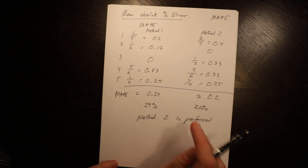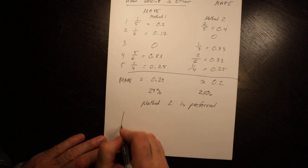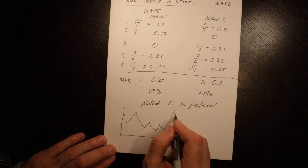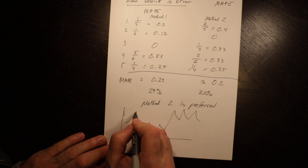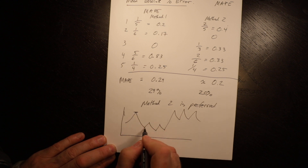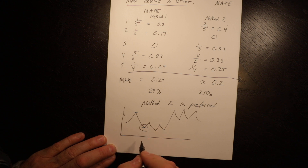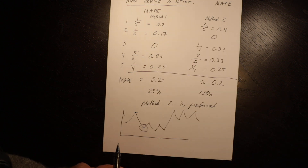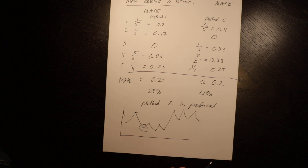Where we would use mean absolute percentage error is when we have highly variable sales. If we're wrong by five up here and wrong by five down here, it's a bigger deal when the sales number is smaller. So if we have a trend or seasonality, MAPE becomes a better approach because it takes the absolute value and compares it to the actual sales. If there's variability, MAPE captures that better.